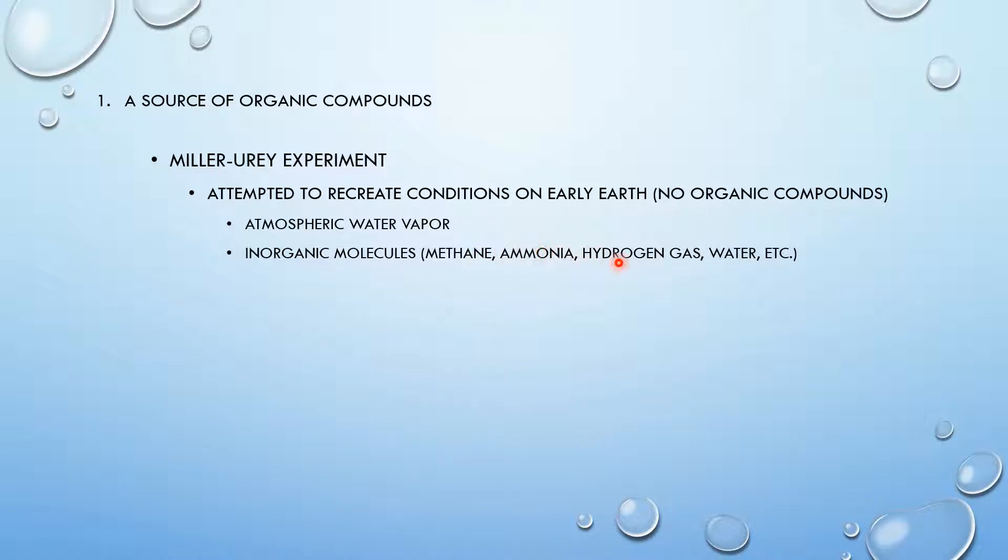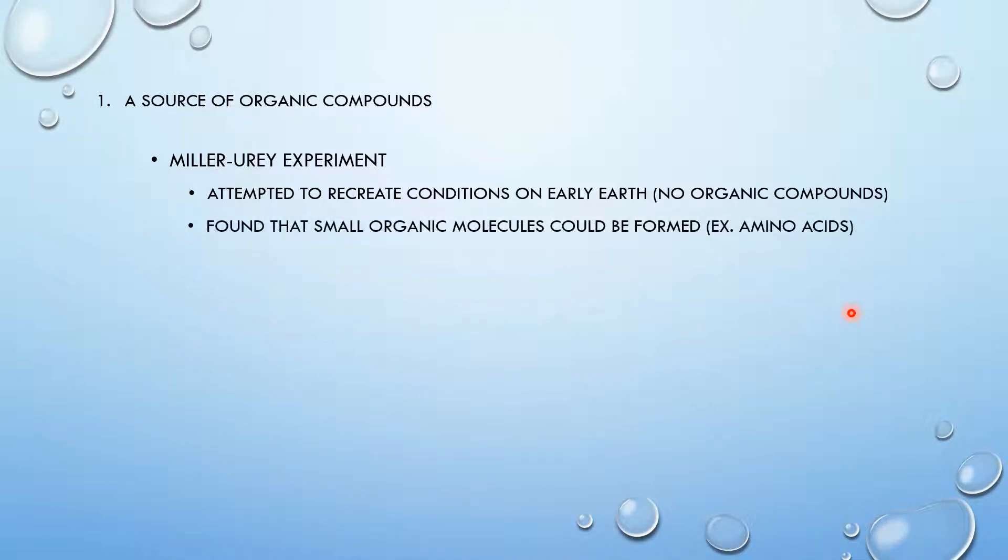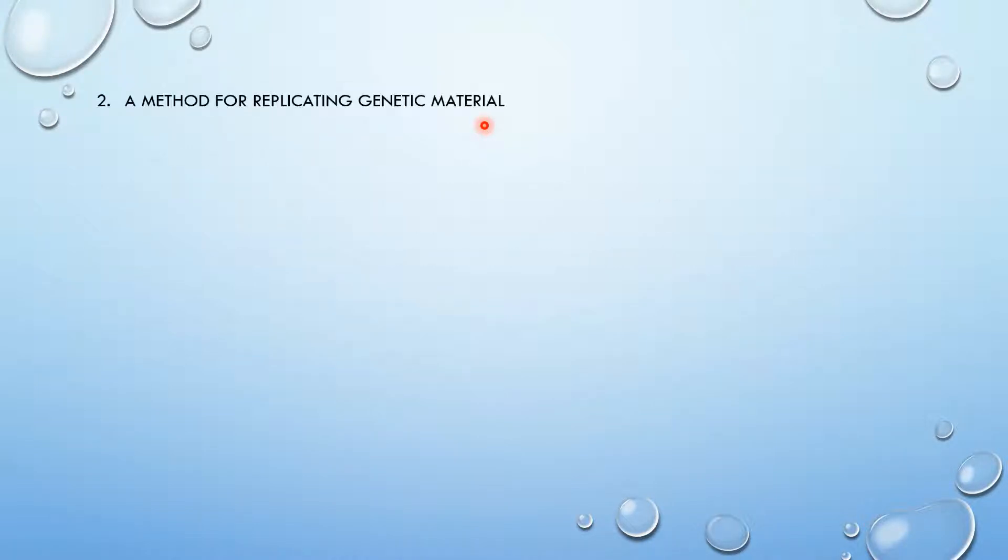Early Earth had atmospheric water vapor, inorganic molecules which include methane, ammonia, hydrogen gas, and water, lightning as an energy source, and lack of free O2. So they found that smaller organic molecules could be formed using inorganic molecules, like amino acids. This showed that organic compounds can be formed from inorganic compounds. So the source of organic compounds is inorganic compounds.